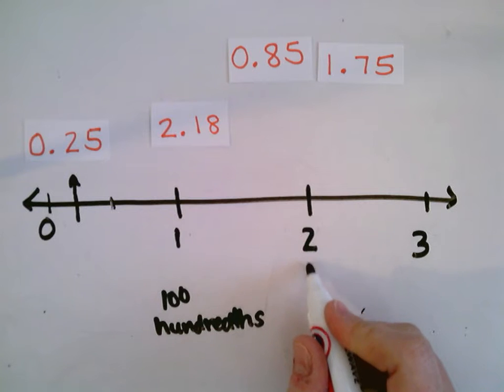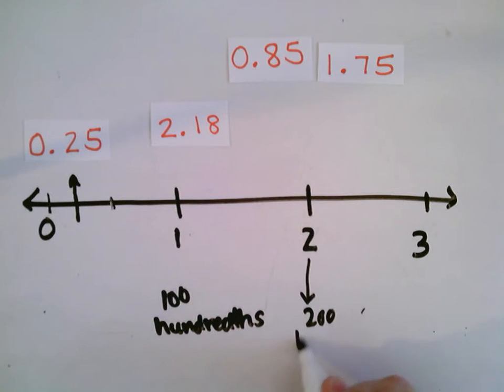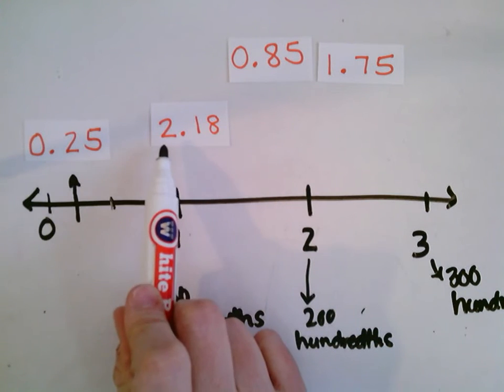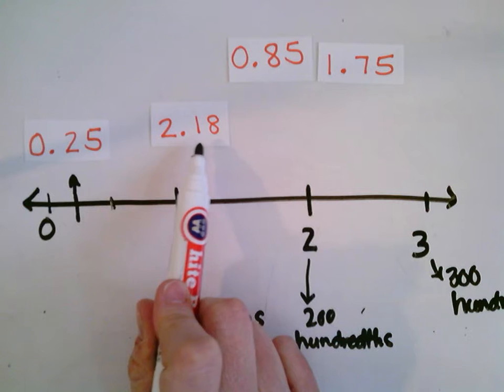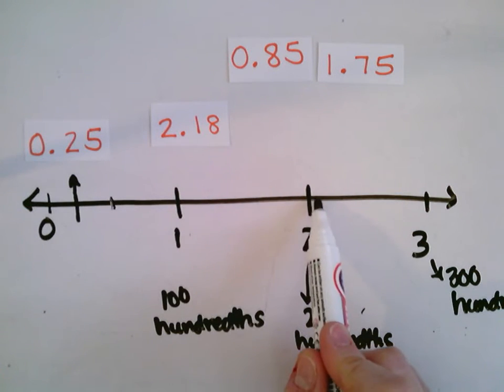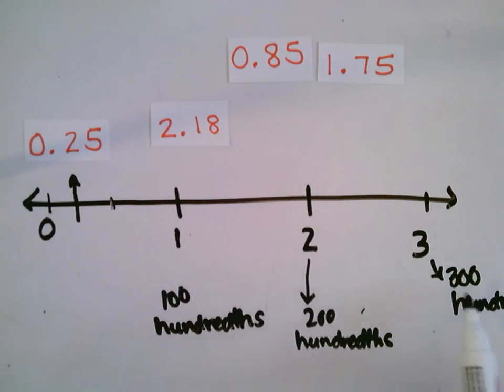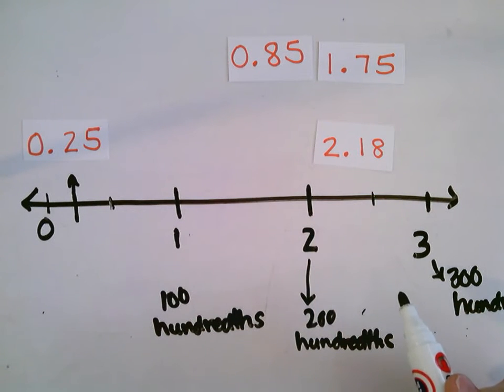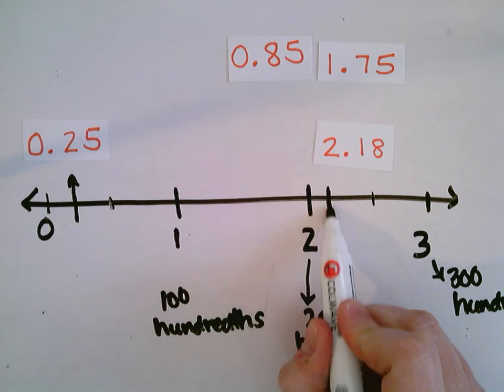So I want to think of this as like 200 hundredths. 2 is the same as 200 hundredths. 3 is the same as 300 hundredths. So I'm going to think, well, 2.18 is the same as 218 hundredths. So I need to think about, well, where would 218 hundredths fall between 200 and 300, right? Again, I'm going to kind of look, here's halfway. That'd be 250 hundredths. So 218 is probably going to be pretty close to here.